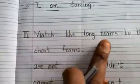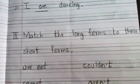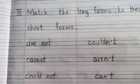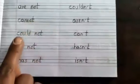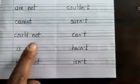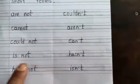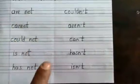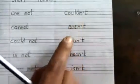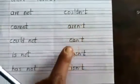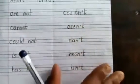Okay children. Now the third bit is: match the long forms to their short forms. Children, I am giving this to you as homework. You have to do the matching. Are not, cannot, could not, is not, has not — you all know their short forms, you have to match them: can't, couldn't, aren't, can't, hasn't, isn't.